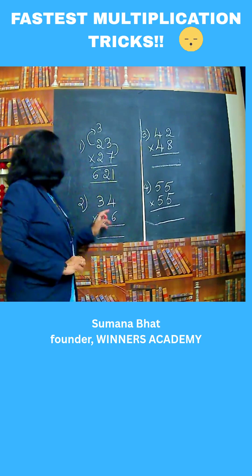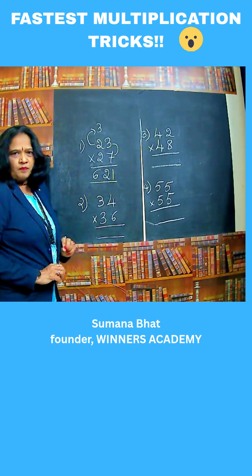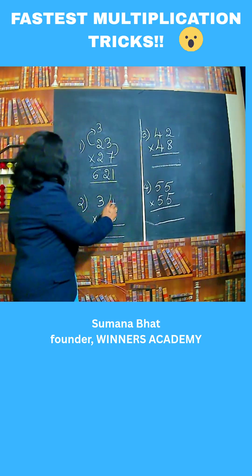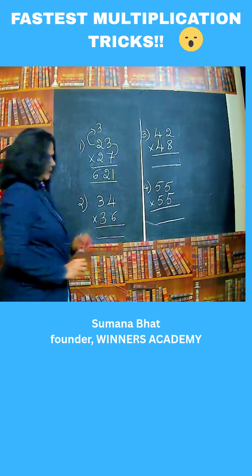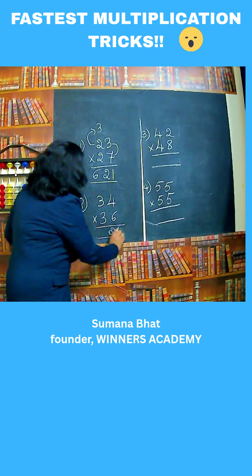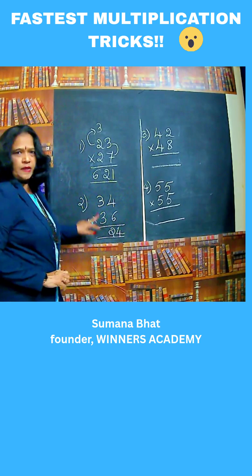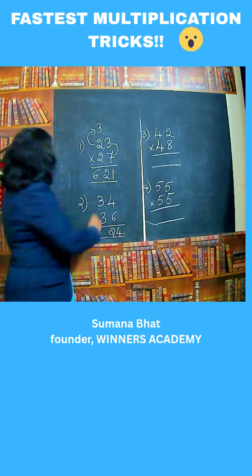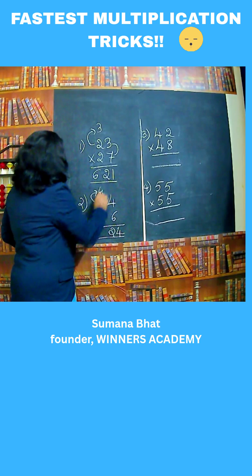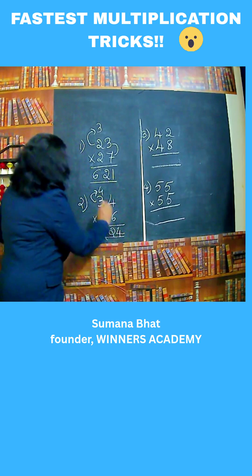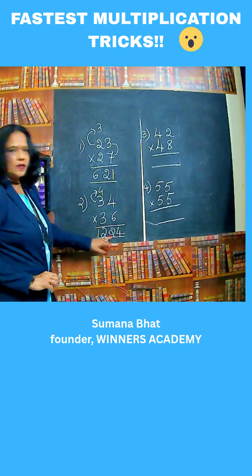See the next one. 34 multiplied by 36. 4 into 6 — 4 times 6 is 24. 3 and 3, same numbers are there. Multiply with the next number. 3 into 4 — 3 times 4 is 12. So the answer is 1224.